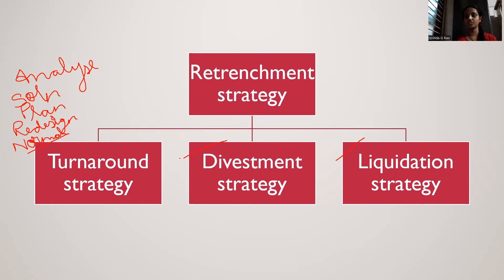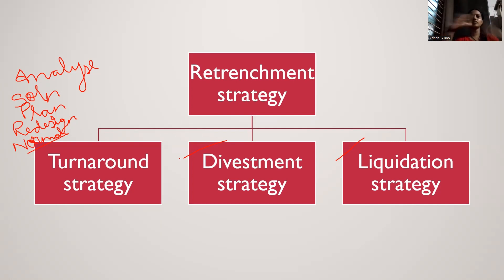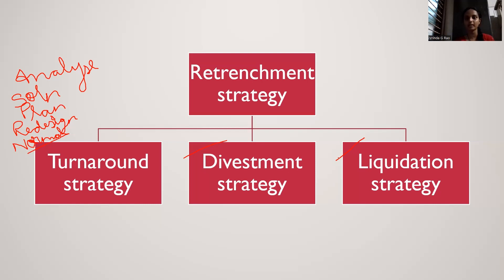Second type is divestment strategy — this happens when you want to quit an industry completely because it is a waste to continue manufacturing in that industry. Investment is putting money into an industry; divestment is the complete opposite — removing the money and moving out of that industry entirely. Third is liquidation strategy — you just want to close the business completely. This could be because there are no more opportunities to grow, you are already facing losses, there is no possible upgradation, and competitors are too strong. So you just liquidate the business and end it.